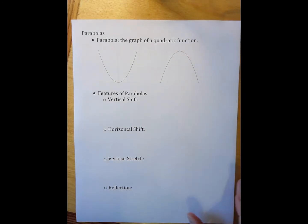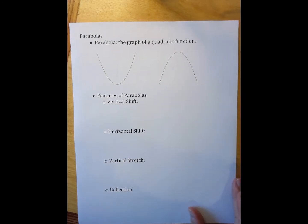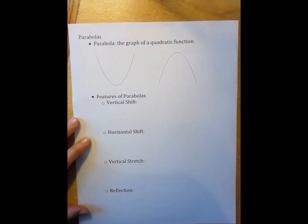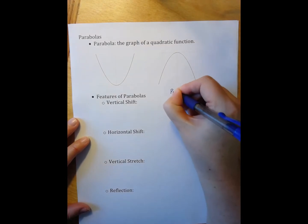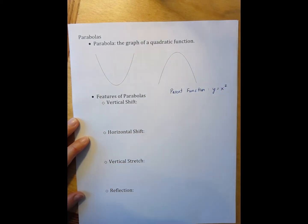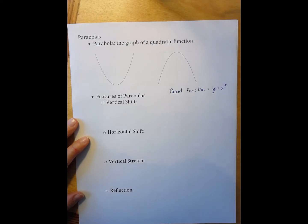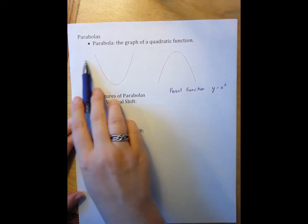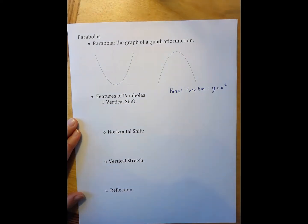So features of parabolas. Parabolas come in what we call the mother function or parent function y equals x squared. When I have a parabola that is not in the parent function shape it means that there's been some sort of transformation to that function.